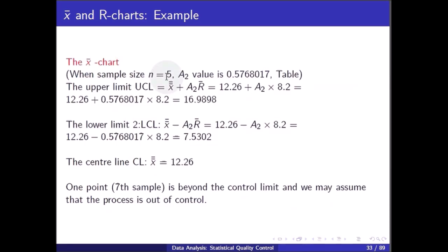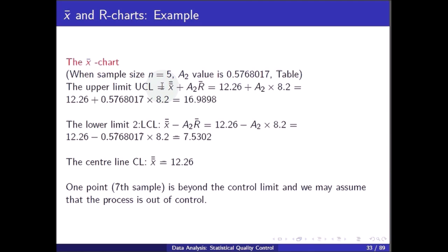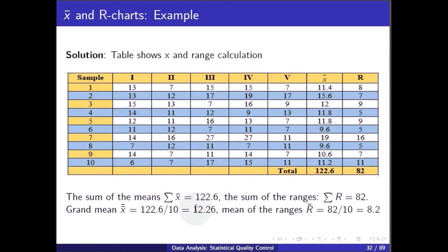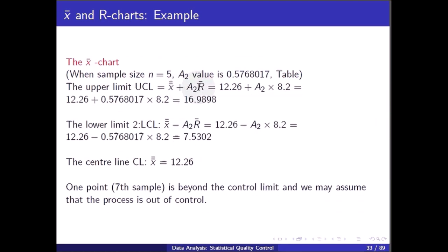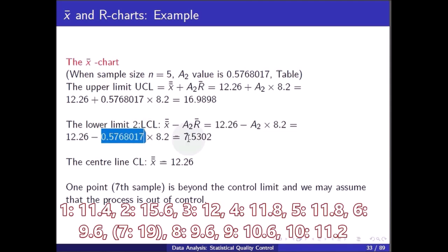For the X-bar chart with sample size n = 5, the A2 value from the table is 0.577. UCL = x-double-bar + A2 * R-bar = 12.26 + 0.577 * 8.2 = 16.9898. LCL = x-double-bar - A2 * R-bar = 12.26 - 0.577 * 8.2 = 7.5302. The center line = x-double-bar = 12.26.